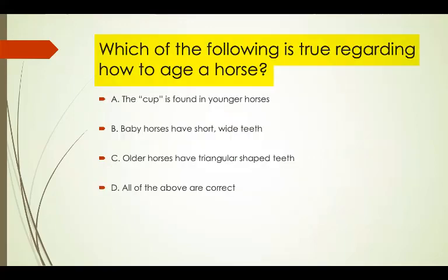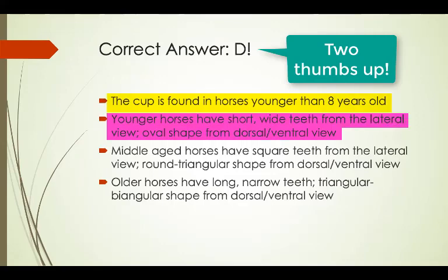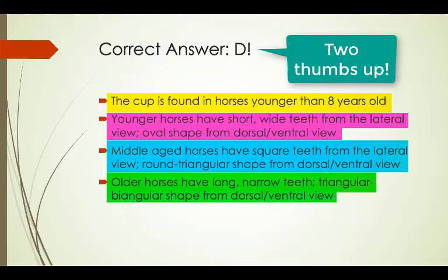Which of the following is true regarding how to age a horse? The correct answer is D. The cup can be found in horses under eight years of age. Younger horses have short, wide teeth with an oval shape. Middle-aged horses have square teeth with a round to triangular shape. And older horses have long, narrow teeth with a triangular to biangular shape.